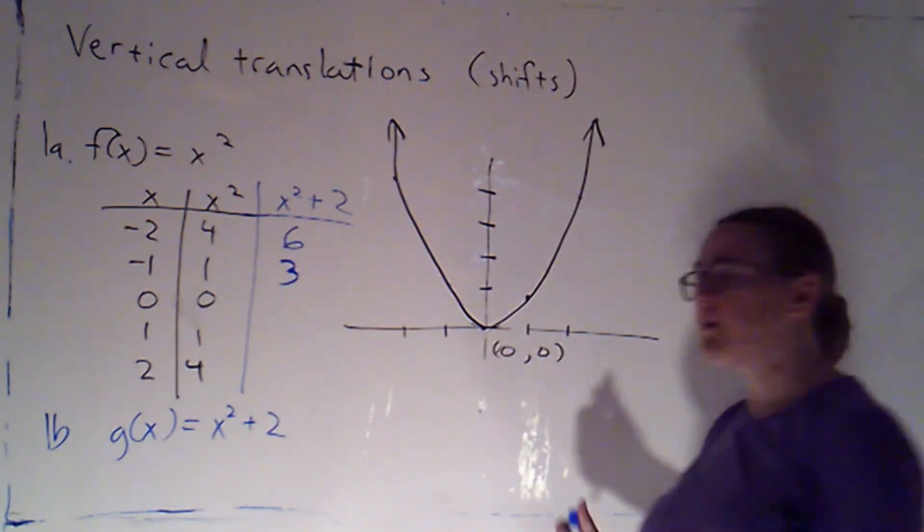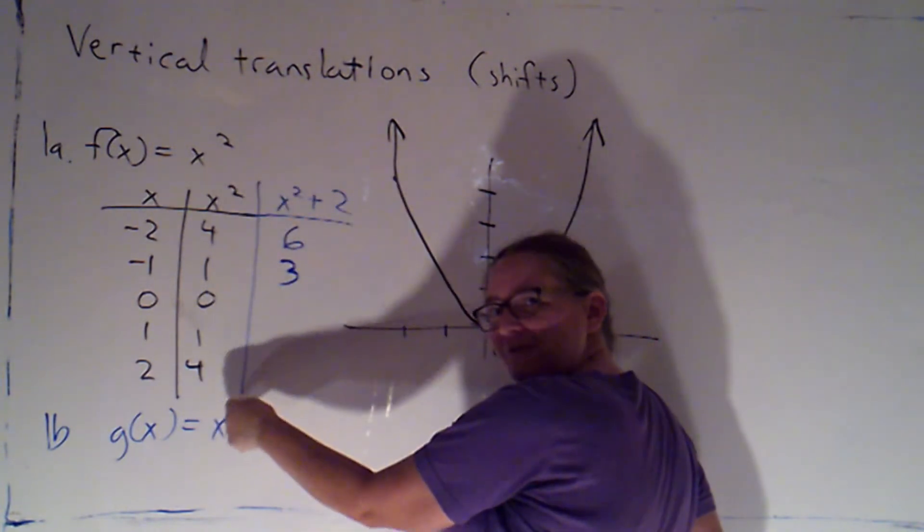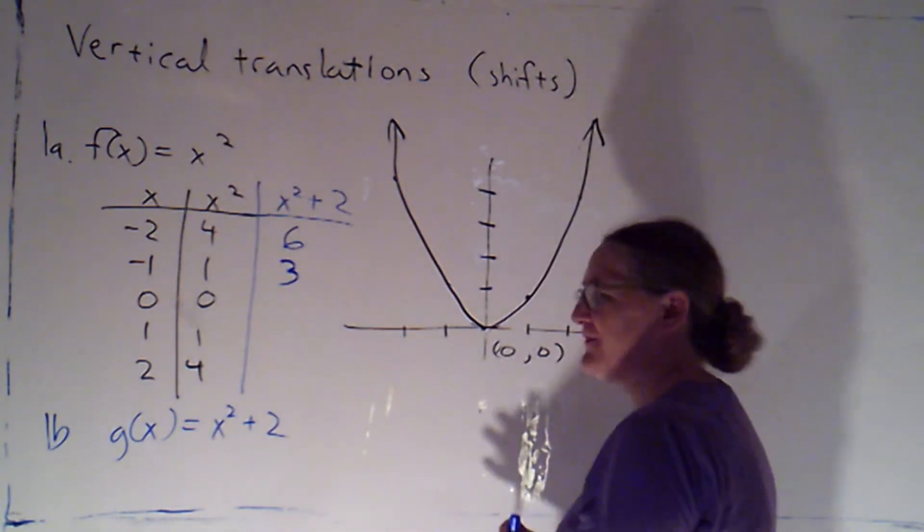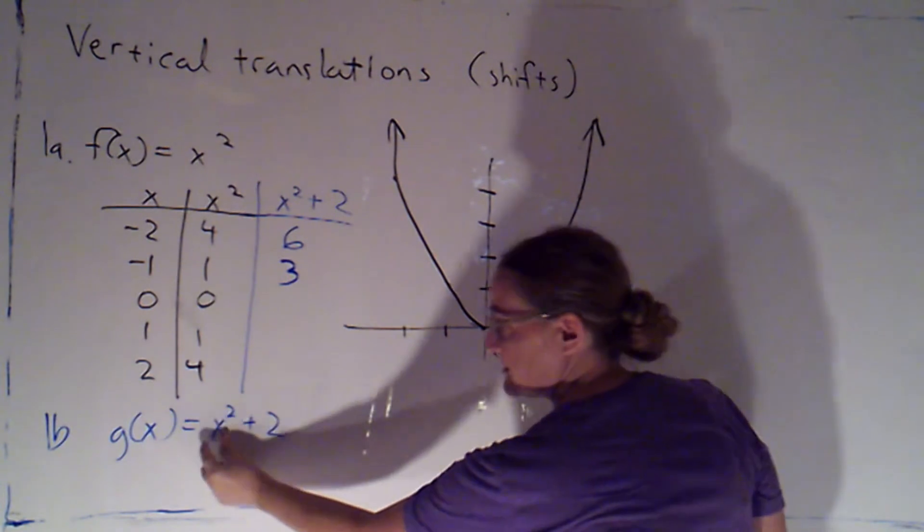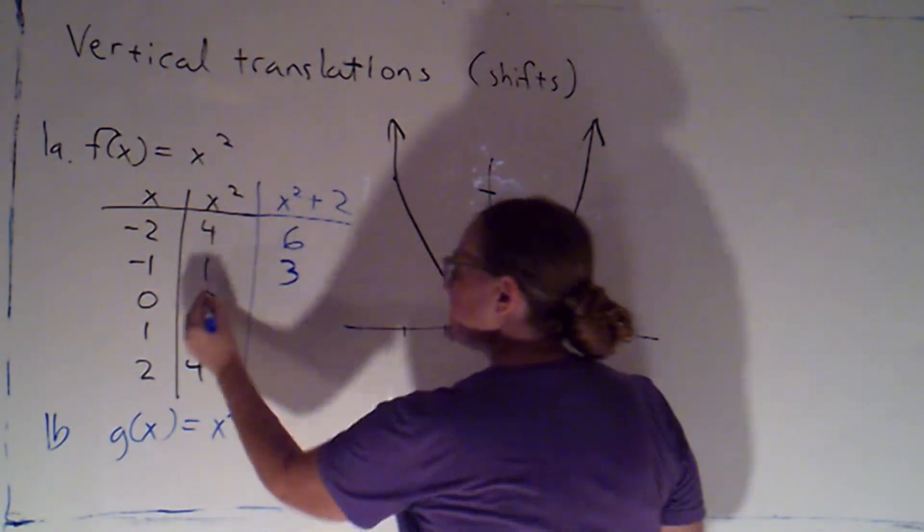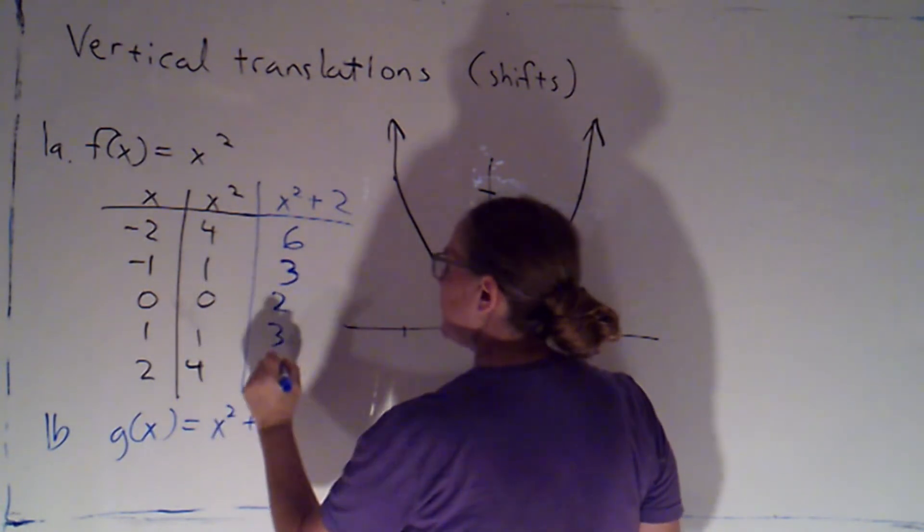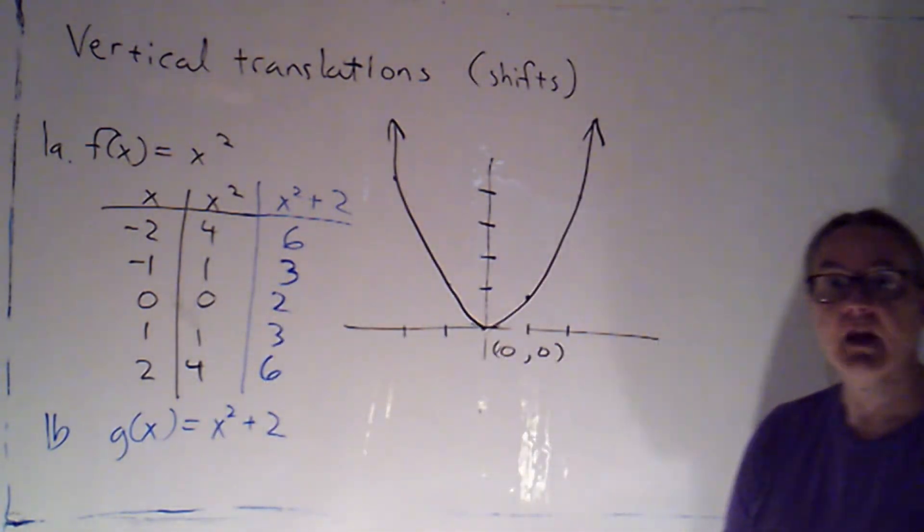So I can see what I'm really doing is just adding 2 to each of these y values, the y values on my parent function. Because that's what this is: the y value on my parent function plus 2. So 0 + 2 is 2, 1 + 2 is 3, 4 + 2 is 6. Now I want to see, what does that tell me about the graph?